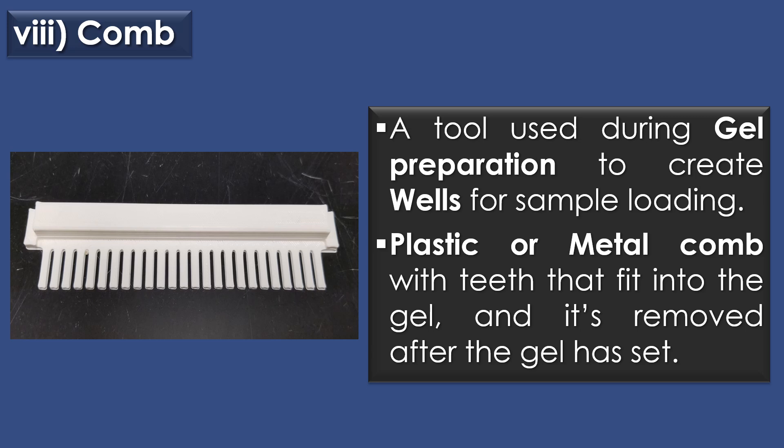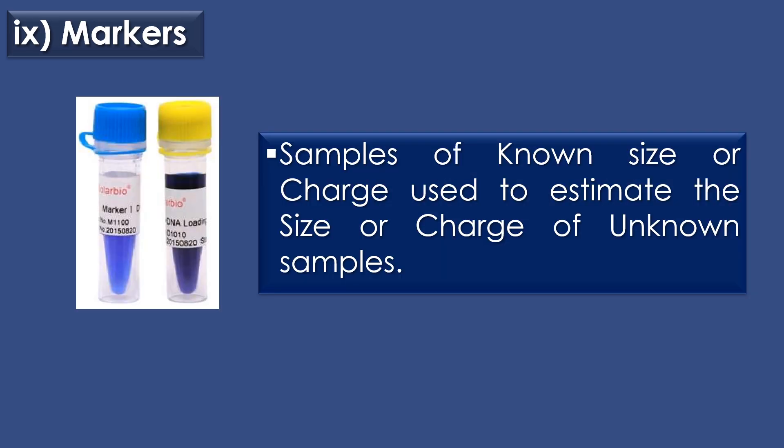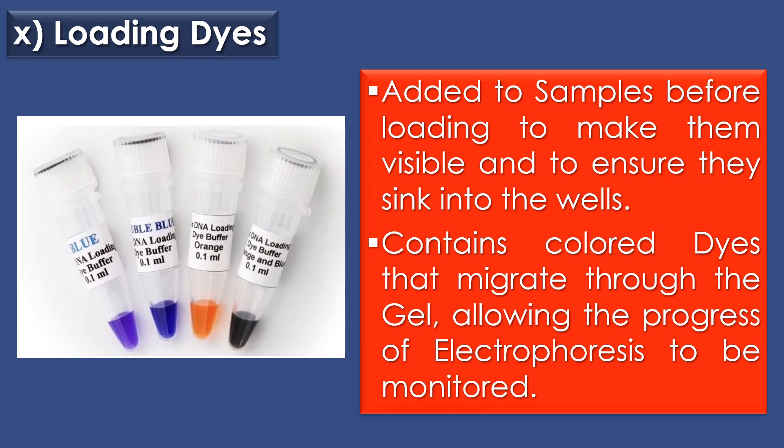The eighth component is comb. Comb is a tool used during gel preparation to create wells for sample loading. It is a plastic or metal comb with teeth that fit into the gel and is removed after the gel has set. The ninth component is markers. Markers are samples of known size or charge used to estimate the size or charge of unknown samples.